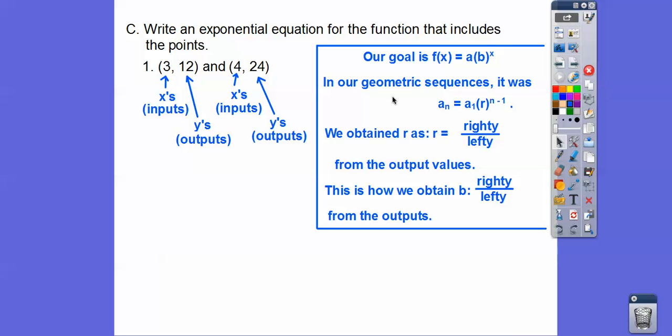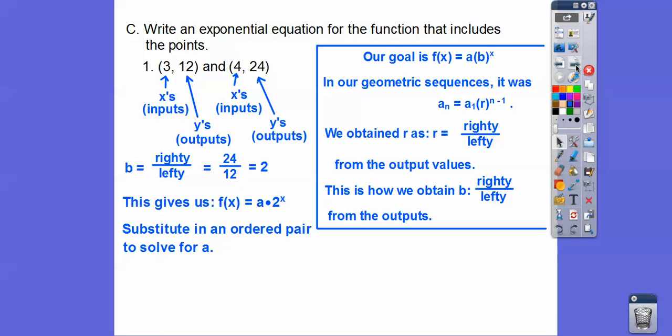So we do righty divided by lefty from the output values. So 24 divided by 12 is going to get us 2 right there. So that's what b is right there. So that gives us a, so so far we have f of x equals a times 2 to the x. And to get a, we just substitute in either this point for x and y or this point for x and y. I chose the first one because they're smaller numbers right there.